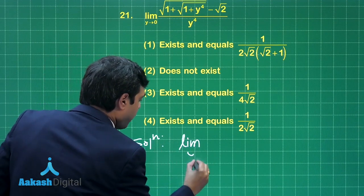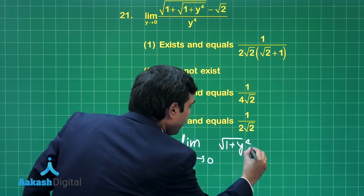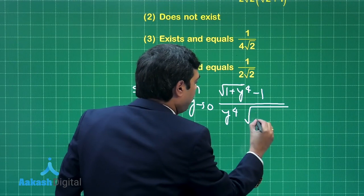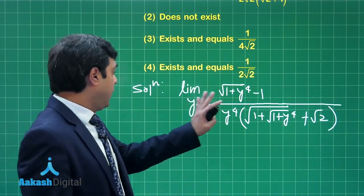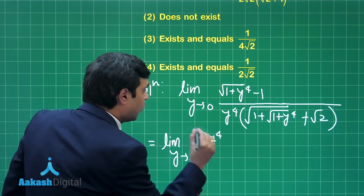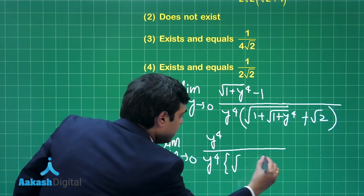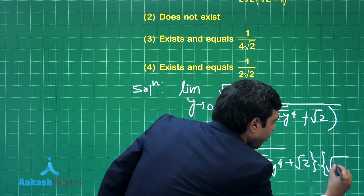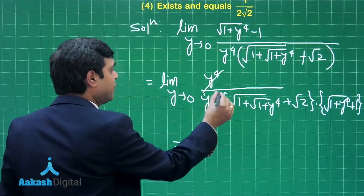Limit y approaching to 0: if I rationalize this numerator part here, I will be getting √(1 + y⁴) - 1 in numerator, divided by y⁴√(1 + y⁴)[√(1 + √(1 + y⁴)) + √2]. This is clear. Rationalizing further, we have limit y approaching to 0: y⁴ divided by y⁴ multiplied with the previously mentioned term and newly multiplied term, that is √(1 + y⁴) + 1. I am sure this point is clear.